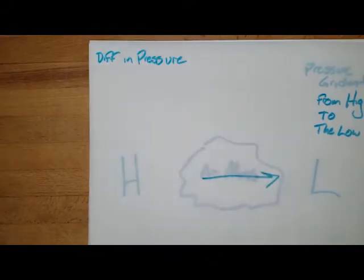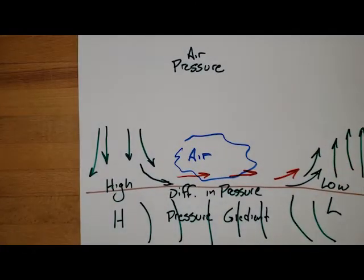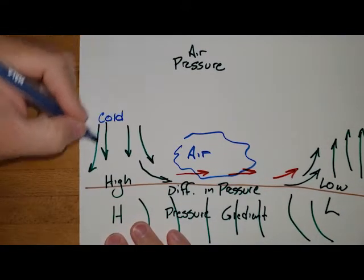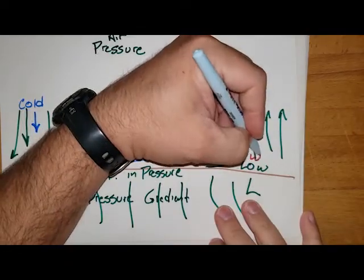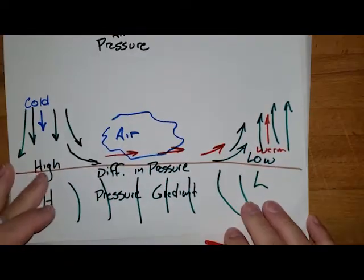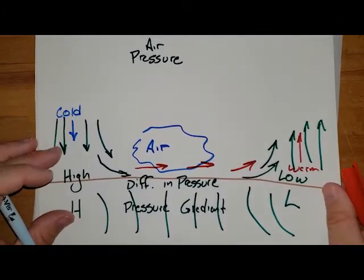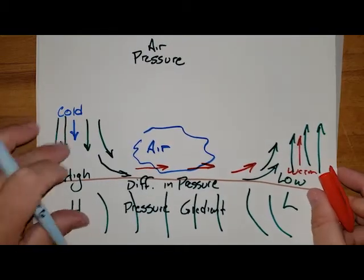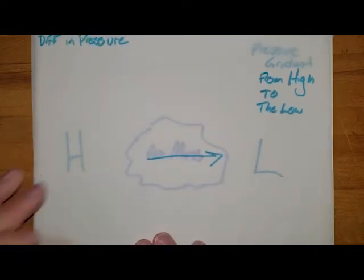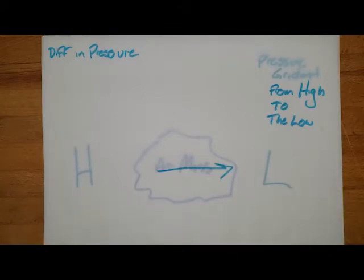One of the main factors that influences this pressure change is going to be temperature. Cold air tends to be more dense, so it starts to sink a little bit. Warm air is less dense and wants to rise like a hot air balloon. So temperature is going to be one of the influences — where it's warmer in one area and colder in another, that pressure gradient causes the air to move from the high to the low.